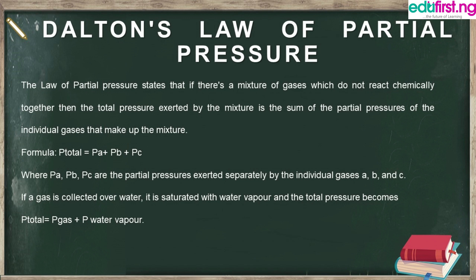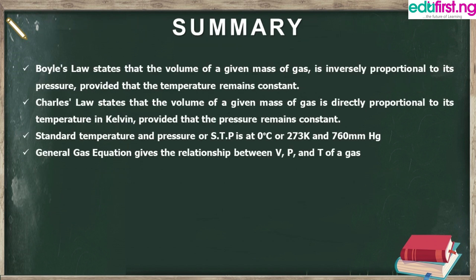Summary: Boyle's Law states that the volume of a given mass of gas is inversely proportional to its pressure, provided temperature remains constant. Charles' Law states that the volume of a given mass of gas is directly proportional to temperature in Kelvin, provided pressure remains constant. Standard temperature and pressure (STP) is 0°C (273 K) and 760 mmHg. The General Gas Equation gives the relationship between volume, pressure, and temperature of a gas.